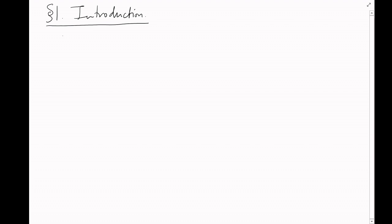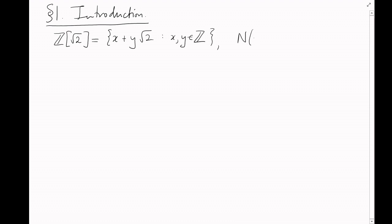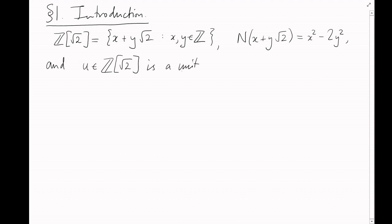Section 1: Introduction. We've seen already that elements of ℤ[√2] are of the form x + y√2, for x and y integers. The norm of x + y√2 is x² − 2y², and an element u of ℤ[√2] is a unit if its norm is plus or minus 1.